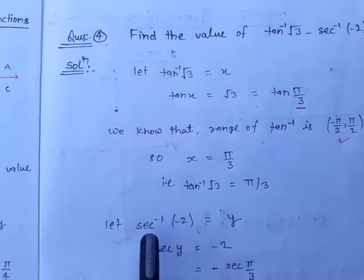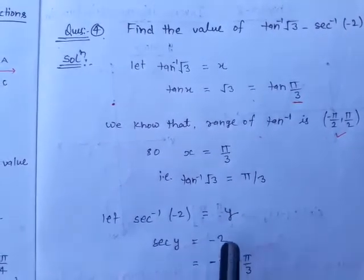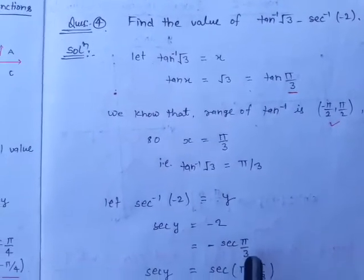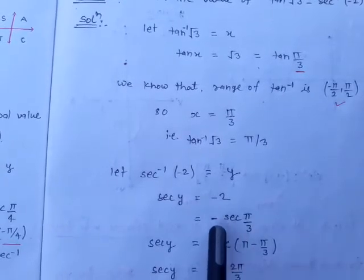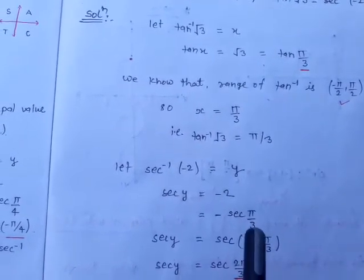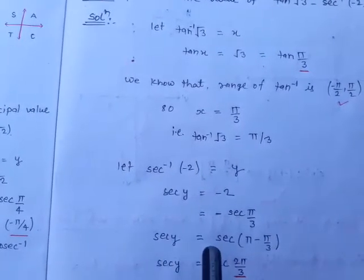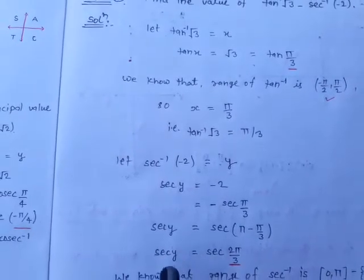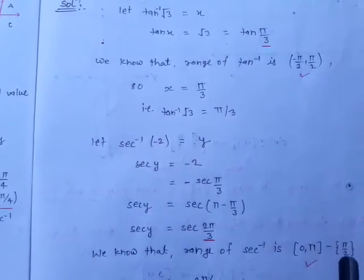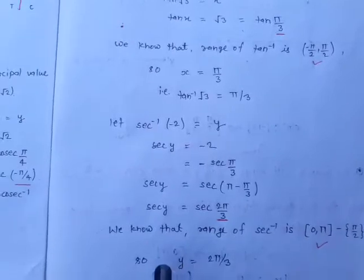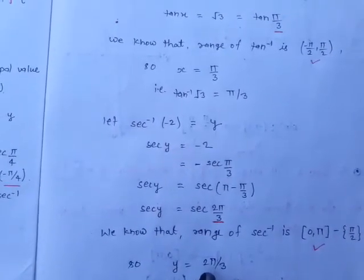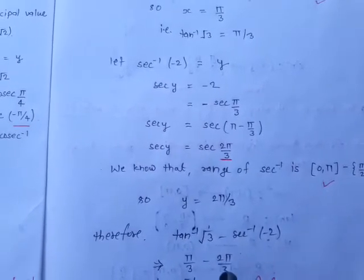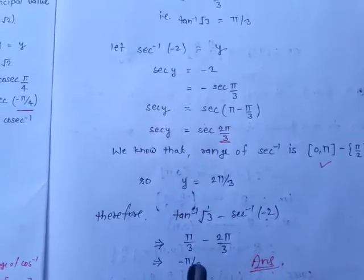For the second part, let sec⁻¹(−2) = y, so sec y = −2. Sec behaves like cosine; ignoring the sign, sec(π/3) = 2, so sec y = −sec(π/3). With the minus involved, like cosine, theta converts to π minus theta: sec y = sec(π − π/3) = sec(2π/3). Checking the range of sec inverse, [0, π] minus {π/2}, 2π/3 belongs to this range, so y = 2π/3. Substituting: tan⁻¹(√3) − sec⁻¹(−2) = π/3 − 2π/3 = −π/3. This is the answer.